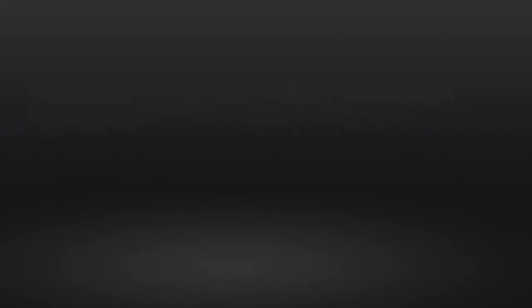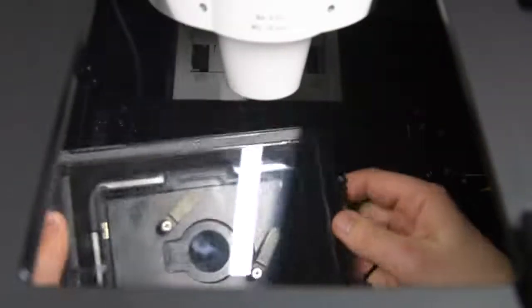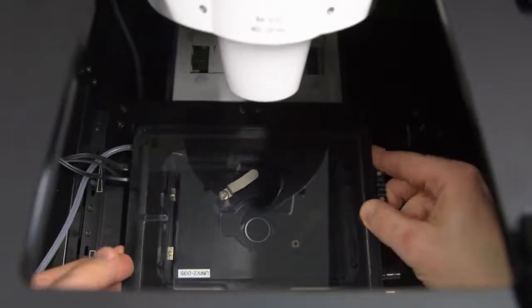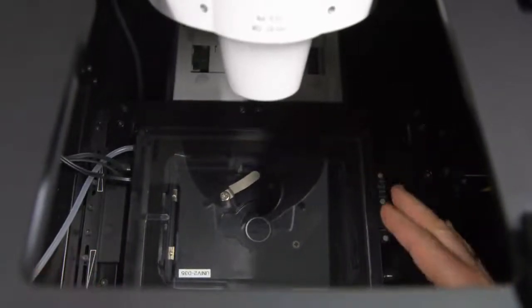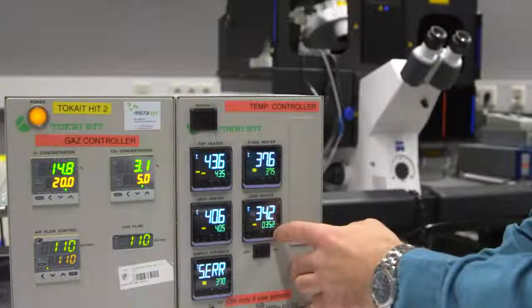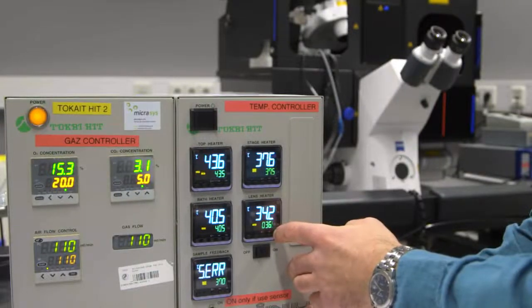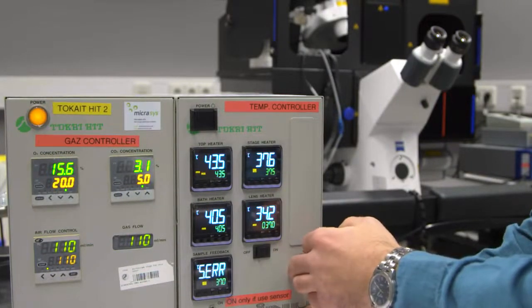For live cell imaging, at least an hour before the imaging session, place a stage top incubator onto the super-resolution structured illumination microscope stage and set the temperature to 37 degrees Celsius and the carbon dioxide concentration to 5%.